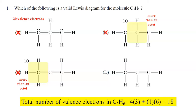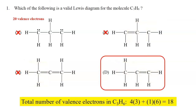Similarly, I can see another violation of the octet rule in choice C — that central carbon atom has more than an octet around it. So the correct answer to question 1 is choice D. Counting the total number of valence electrons gives 18, the proper number, and there are no violations of the octet rule for any of those carbon atoms. The answer to question 1 is choice D.